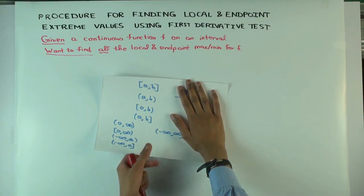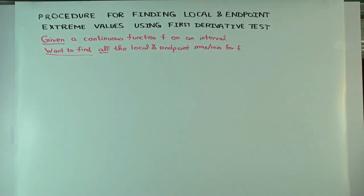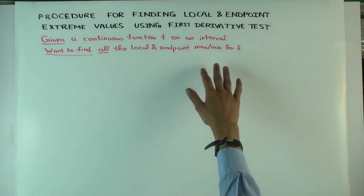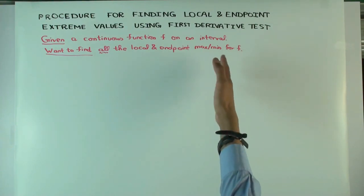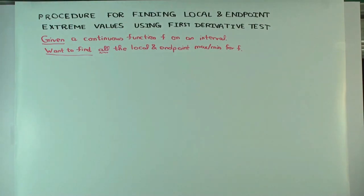Once you've found the endpoints — which is either 0, 1, or 2 endpoints depending on if it's open or closed on a particular side — for each one, you figure out whether it's a one-sided max or min. If it's a left endpoint, you want to know whether it's a local max or min from the right.